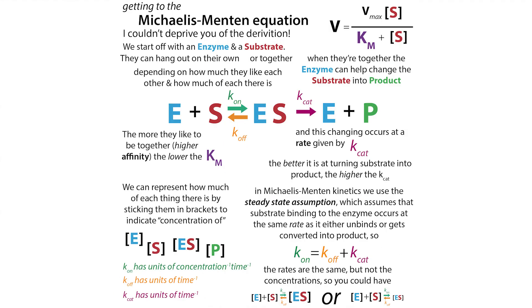Because we're in the steady-state zone, the rate of binding equals the rate of either dropping the substrate or converting it to product. It's not always going to grab and convert — sometimes it drops it, and the lower the affinity, the more frequently it drops it. This is why you have different velocities at different substrate concentrations: the enzyme has to bind efficiently and effectively — it has to have productive binding — in order to convert substrate to product.